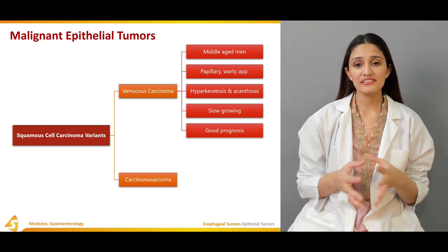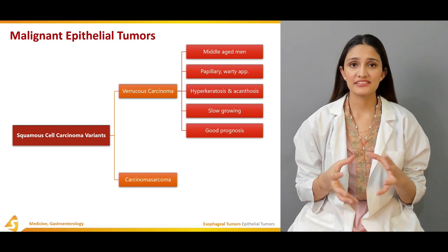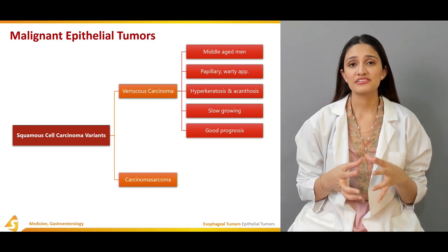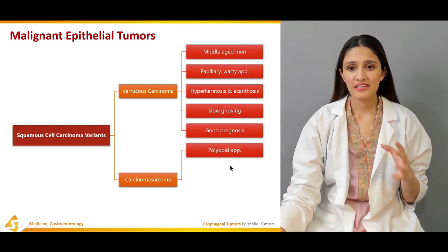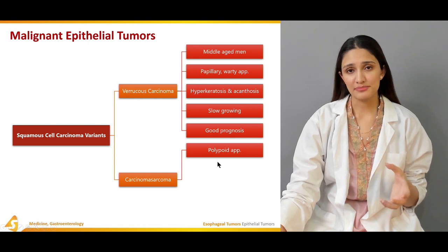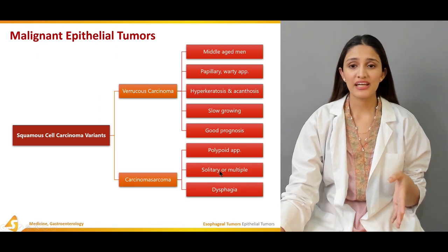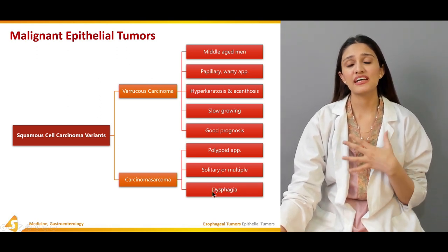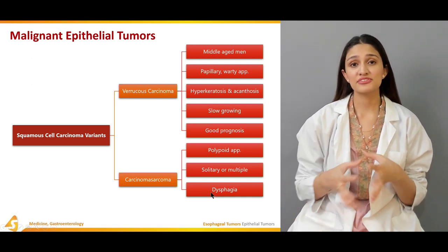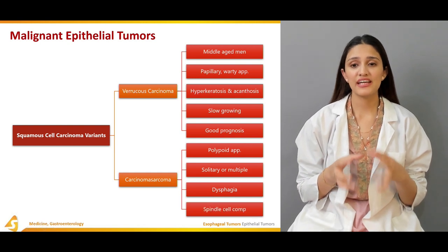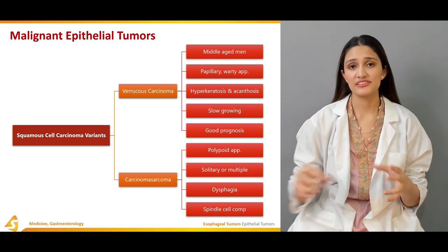The second variant of squamous cell carcinoma is carcinosarcoma, also called pseudocarcinoma or polypoid carcinoma. It has a polypoid appearance and is usually solitary or can be multiple. The patient usually presents with dysphagia and some epigastric discomfort. Histologically, there is a very prominent spindle cell component within this tumor.